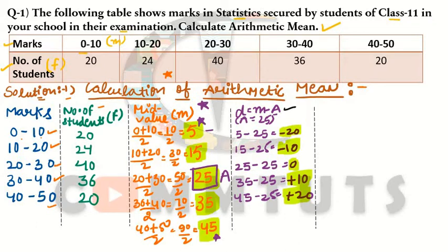Our next step is to calculate step deviations, because we have to calculate arithmetic mean using the step deviation method. If we were using the shortcut method, we would just multiply deviations by frequency to get fd and then calculate arithmetic mean. But since we are using the step deviation method, we must also calculate step deviation d' here.